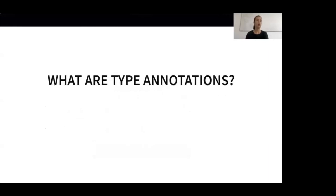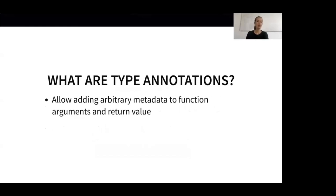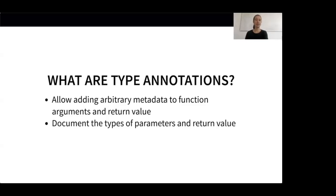Next, I want to talk about an extremely useful feature that came out with Python 3.5: type annotations. Type annotations are such a great tool that I use them every day to increase the quality of my code. So what are type annotations? Type annotations allow us to add arbitrary metadata to function arguments and the return value of a function. First of all, it allows us to document the types of our function parameters. Furthermore, type annotations can be used for things like type checking. For our case, using them for documentation is already a good enough point to get started.